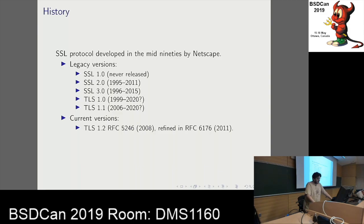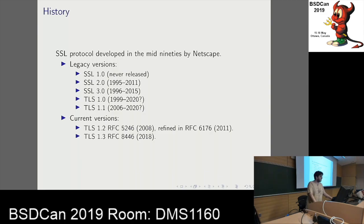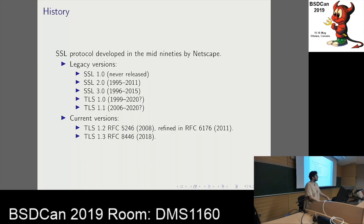The current versions of the protocol are TLS 1.2 — that's the currently supported version in LibreSSL. We do not yet support TLS 1.3; that's still work in progress. The first version of TLS 1.2 was released in 2008, amended with elliptic curve cryptography in 2011. Finally, the latest and greatest version, TLS 1.3, was finalized and published in RFC 8446 in 2018.